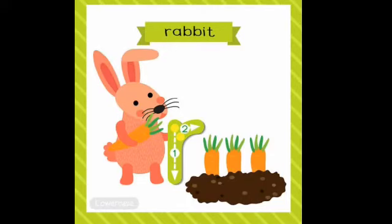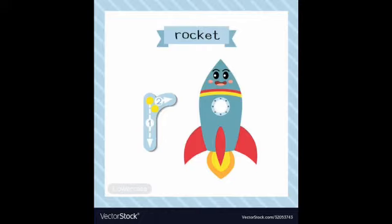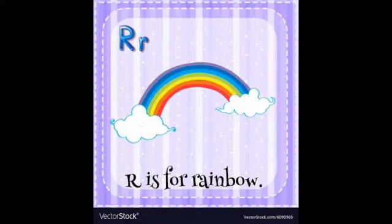The first word is rabbit — R is for rabbit. Next is rocket — R is for rocket. Next picture is rainbow — R is for rainbow.